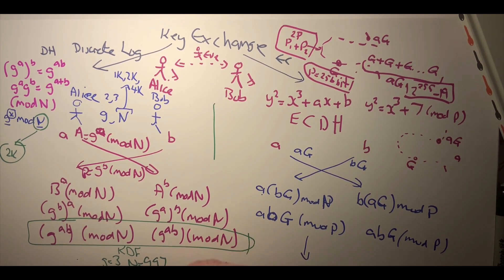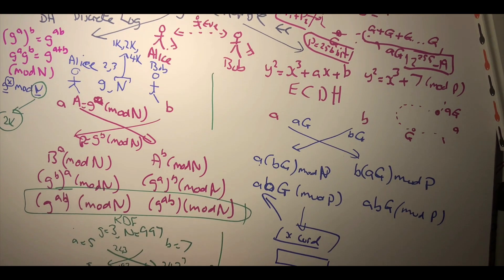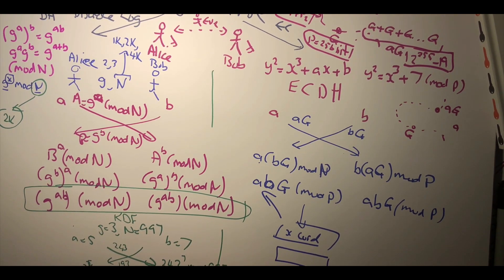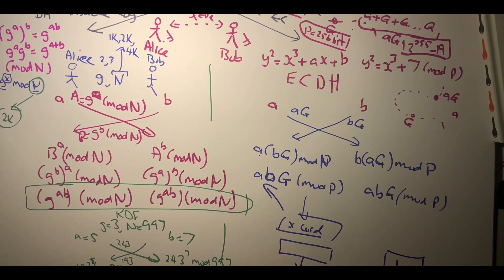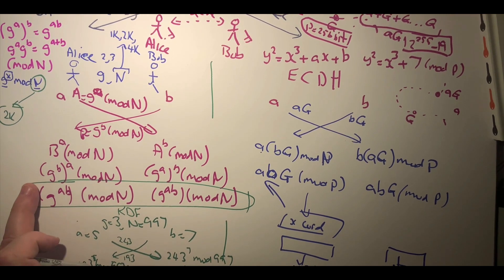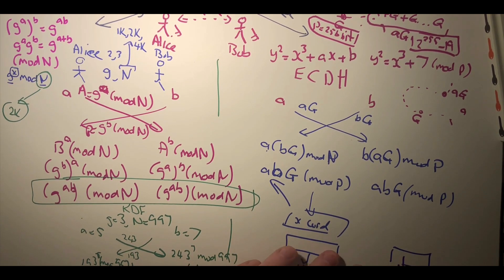Okay, so they end up with the same point abg on the curve. Often what then happens is that we take the x coordinate of this point, and the x coordinate is then put into a key derivation function on either side, and then we'll create the same shared key between the two.